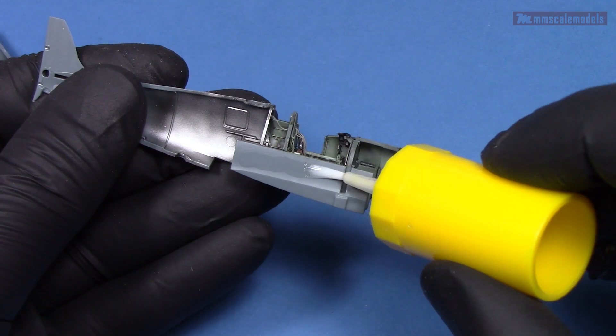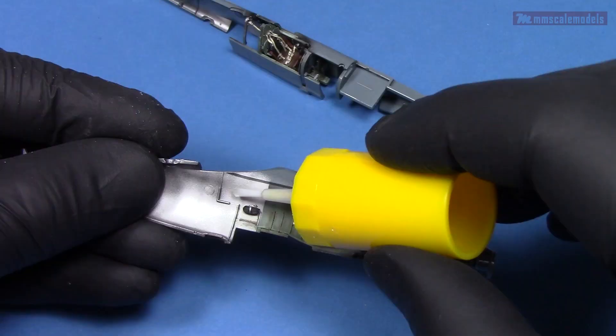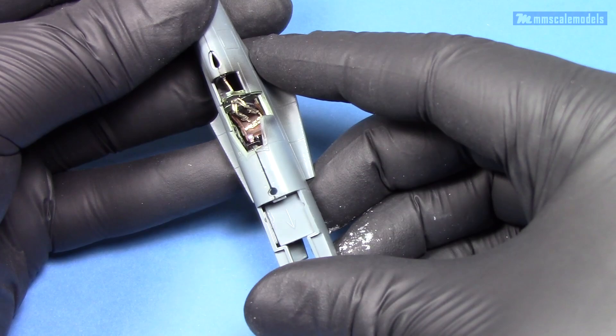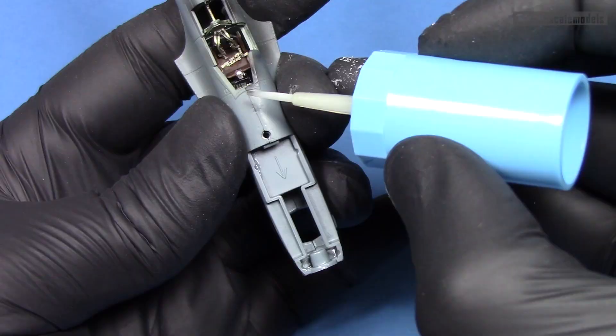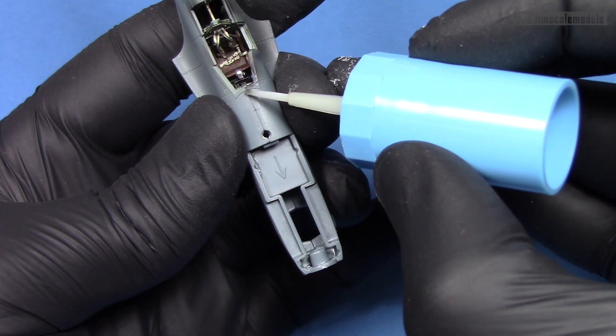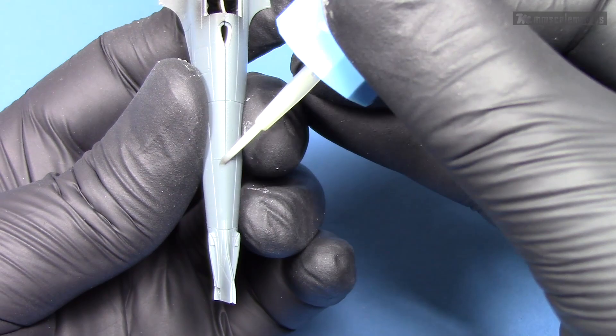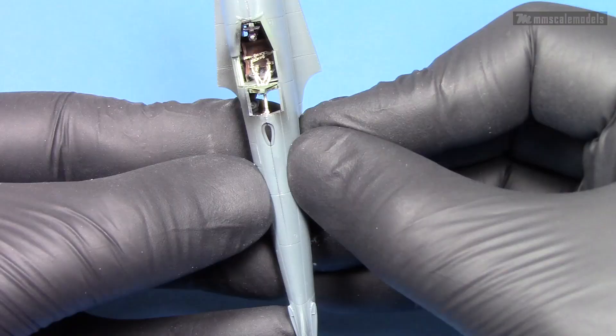And then the fuselage halves can come together and they do that very well. Considering what a complex sub-assembly the cockpit is I expected some alignment related issues but not this time. The fuselage halves perfectly hug the cockpit and join in one piece. That's great I love when basic assembly is effortless.